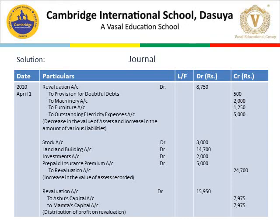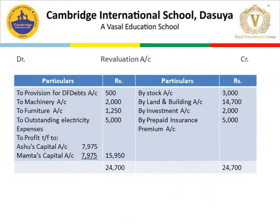These are our journal entries. Now, revaluation journal entries are transferred to the revaluation account. On debit side: to provision for doubtful debts 500, to machinery account 2,000, to furniture 1,250, to outstanding electricity expenses 5,000. On credit side: by stock 3,000, by land and building 14,700, by investment 2,000, by prepaid insurance premium 5,000. Total of credit side is 24,700 and total of debit side is 8,750. The difference is 15,950, which is the profit on revaluation, transferred to Ashu and Mamata's capital accounts in equal ratio — 7,975 each.